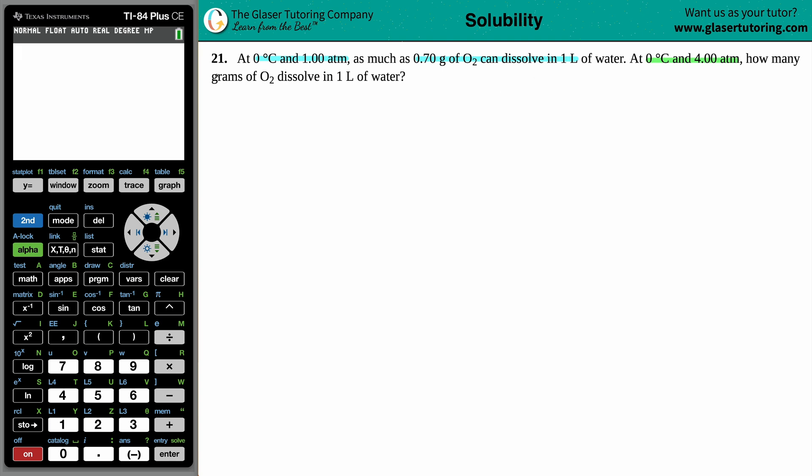The formula that comes to my mind is this one right here. P1 V1 over N1 T1 equals P2 V2 over N2 T2. This is the combined gas law.